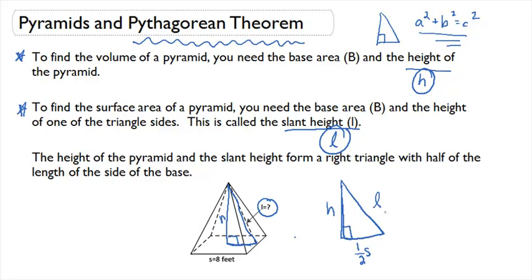Here we can use Pythagorean Theorem to find either h or l. That's really important to us. To set up Pythagorean Theorem, we would just set up h squared plus one half s squared equals l squared.